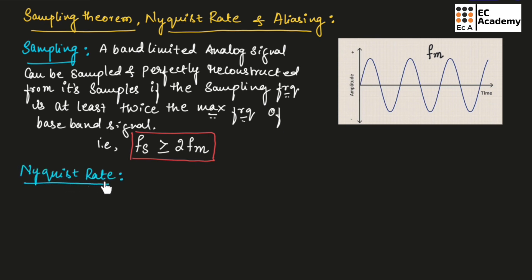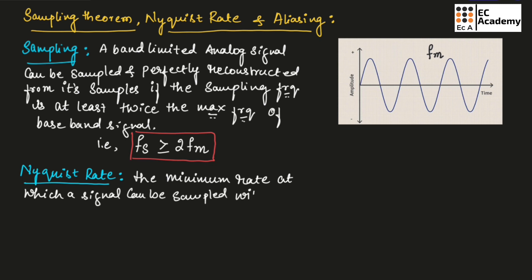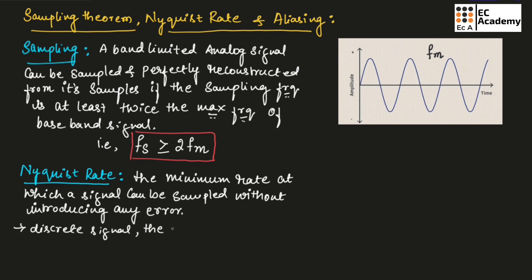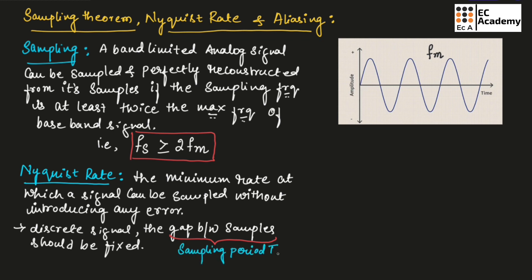Now let us understand Nyquist Rate. The Nyquist Rate is the minimum rate at which a signal can be sampled without introducing any error. By using sampling, a continuous analog signal is converted into discrete signals. To obtain a discrete signal, the gap between samples should be fixed. This gap between samples is known as sampling period, that is Ts. From this sampling period, we can obtain sampling frequency: Fs is equal to 1 divided by Ts.